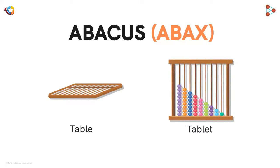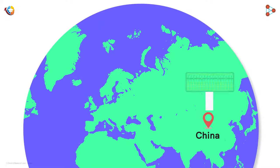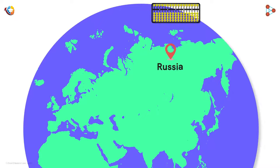It seems our friends have a question. Is it called Abacus everywhere? Well, not really. In China, the tool is called Suanpan. In Japan, it's called Soroban. And in Russia, it's called Shorty.